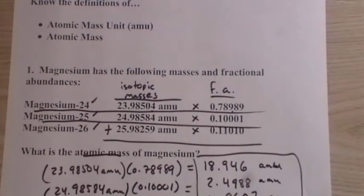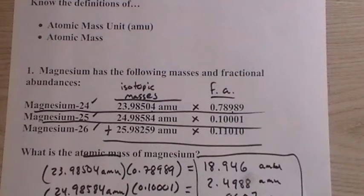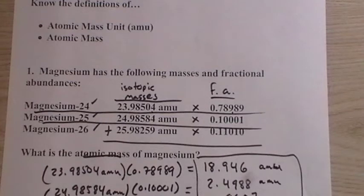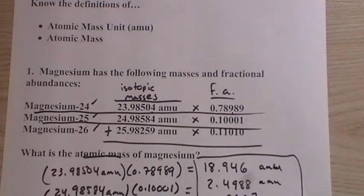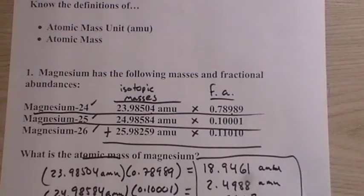Once we have these, then we add them. You don't multiply them, you don't divide them, you add them. So 18.946 plus 2.4988 plus 2.8607. And this comes up to be 24.3, and we have three decimal places here, so we have to stop. 06 AMU.